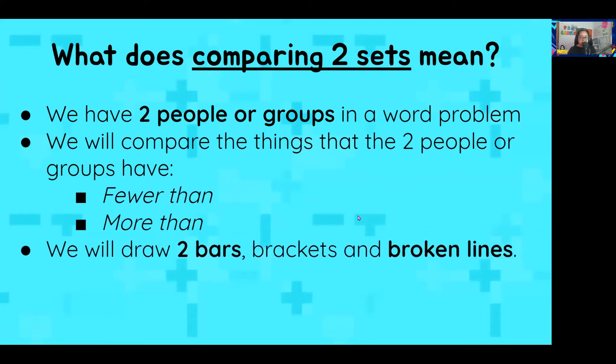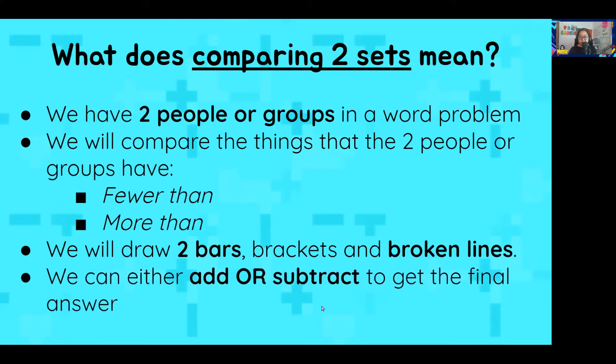Next, in comparing two sets, we will be drawing two bars, one for each person or group. We will also have the brackets with the numbers and question mark, and we will be making some broken lines. When we compare two sets, it doesn't always have to be subtraction. If you remember, in P1 last year, we learned how to compare by subtraction.